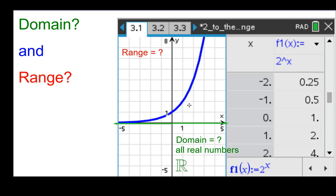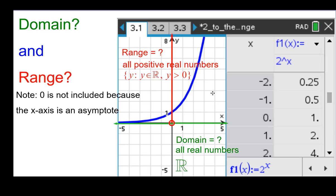The range is not all real numbers. Notice that 0 is not included, but everything above it is as a point, either the left or the right of it. So the range is all positive real numbers, not including 0. And we write that as the set of all y such that y is a member of the real numbers, y is strictly greater than 0. Note 0 again is not included because the x-axis is an asymptote.